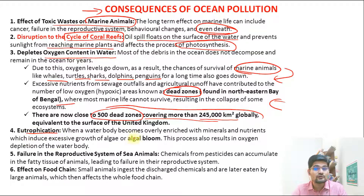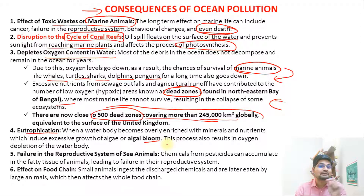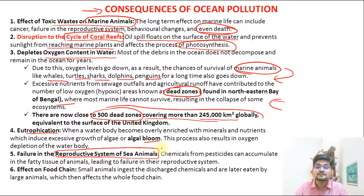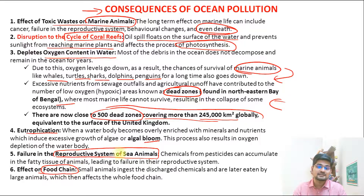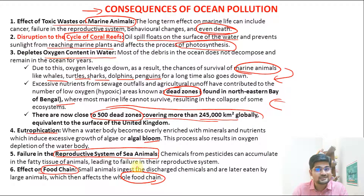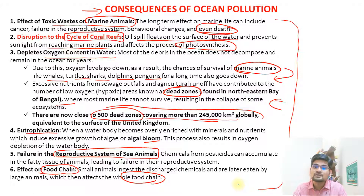Eutrophication occurs when a water body becomes over-enriched with minerals and nutrients, inducing excessive algal growth — an algal bloom — which causes further oxygen depletion in the water body, impacting marine life. There is also failure in the reproductive system of sea animals due to chemical pollution, leading to depletion or extinction of species. The effect on the food chain is significant: if one segment of animal population is impacted, the entire interconnected food chain is affected, as we know from the principles of ecology.